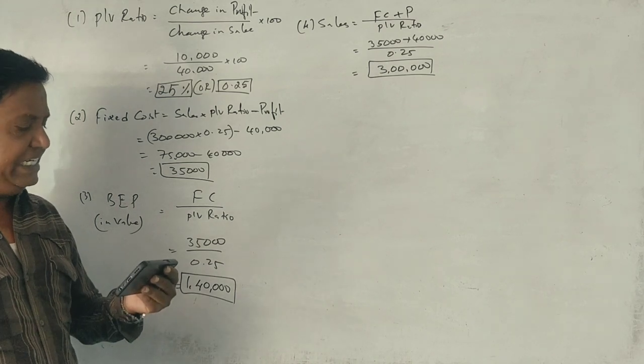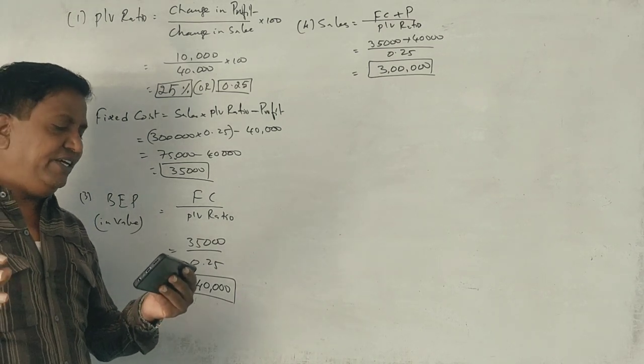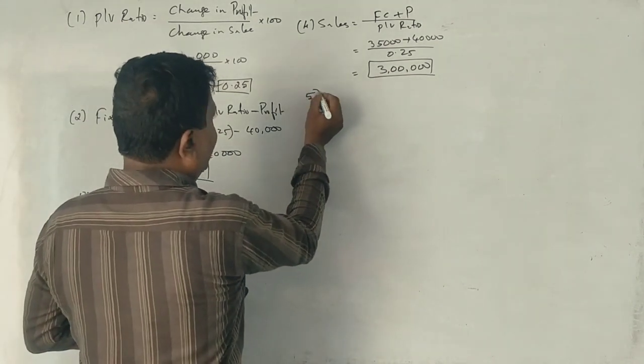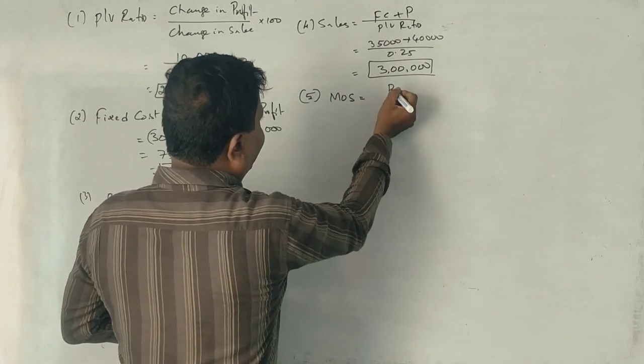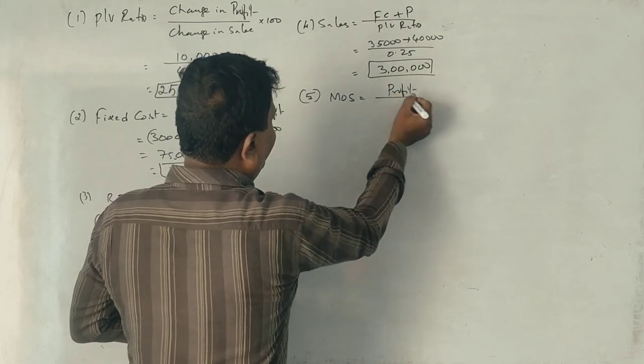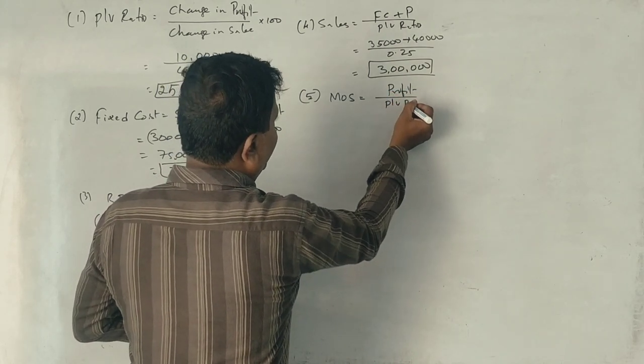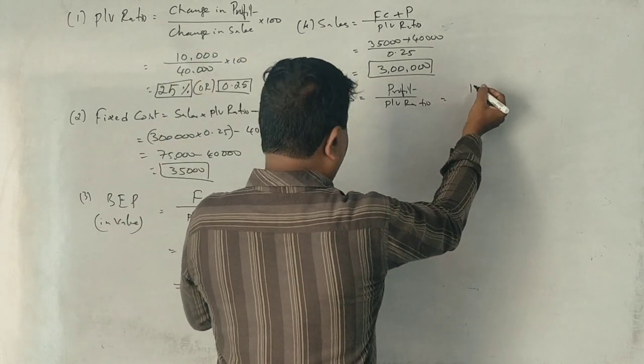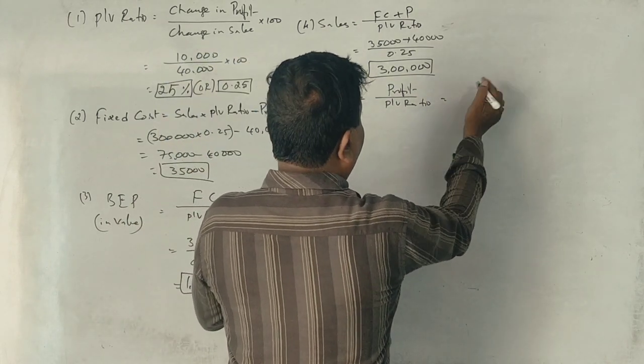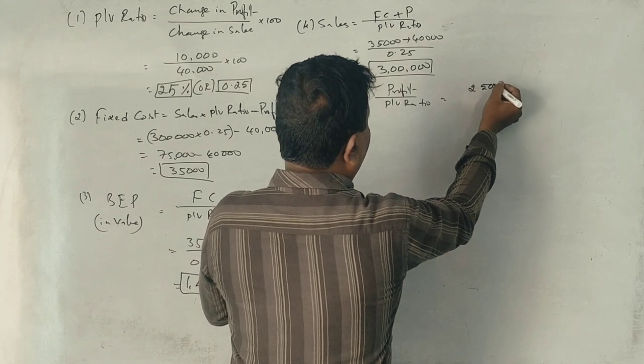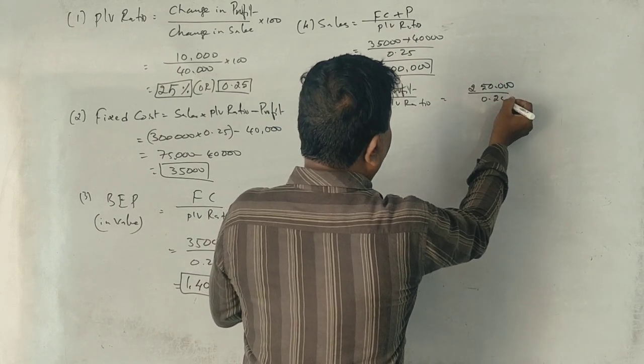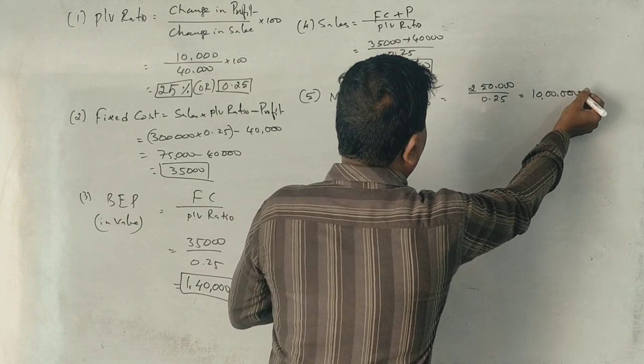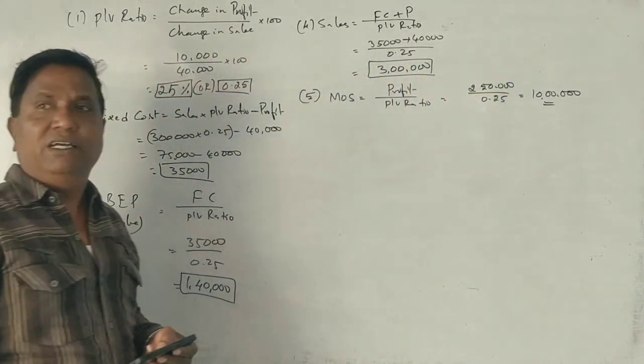Next, margin of safety at profit of 2,50,000. Margin of safety equals profit divided by PV ratio. Profit is 2,50,000, PV ratio 0.25, so 10 lakhs.